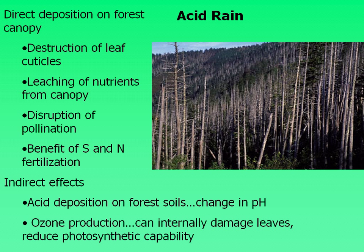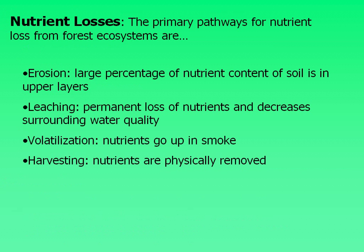Nutrient losses in a forest are caused by four major factors. Erosion occurs when nutrients are lost from the soil or moved from point A to point B, which usually ends up being a stream or river. Nutrient leaching is the permanent loss of nutrients ending up in the water as well, which can also impact water quality as these nutrients load the stream and interfere with normal stream flora and faunal activities.